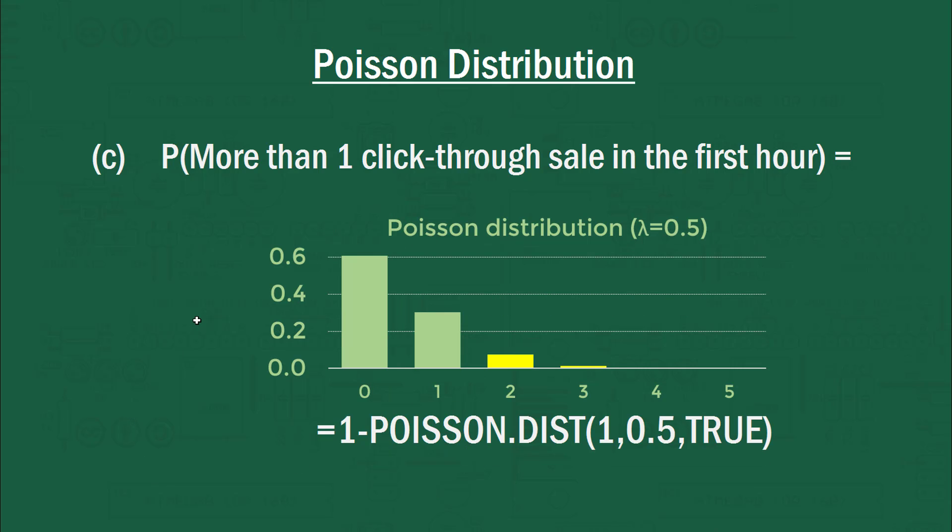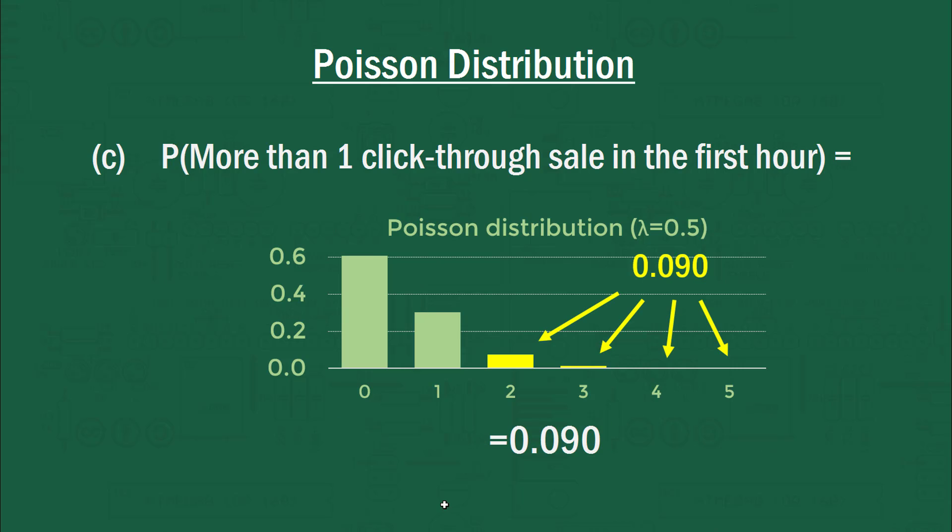To get that, it's going to be very much like the last example. We're going to go 1 minus Poisson dist, where we're taking the cumulative distribution, so putting true in that third argument, but we're doing it from 1, where the mean is 0.5. So we're going to be subtracting from 1 these two bars here, which is 0.090. So there's only a 9% probability of getting more than 1 click-through sale in the first hour.